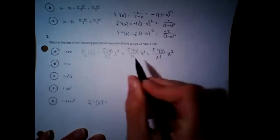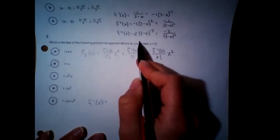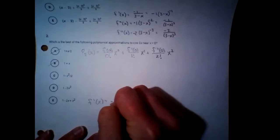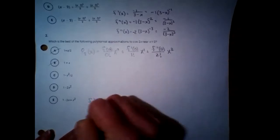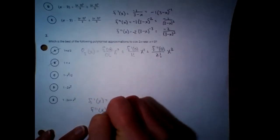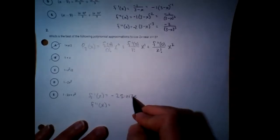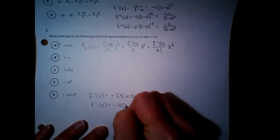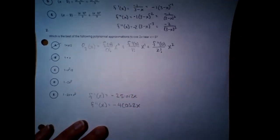I need my derivatives. First derivative: derivative of cosine is negative sine, and then chain rule — multiply on a 2. So this is negative 2 sine of 2x. Second derivative: derivative of sine is cosine, chain on another 2, so multiplying gives negative 4 cosine of 2x.